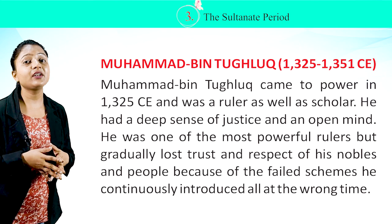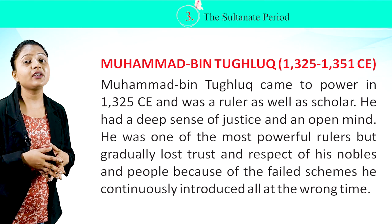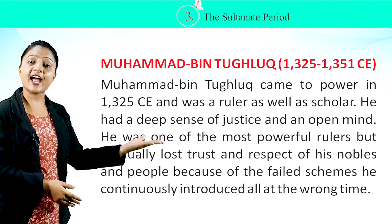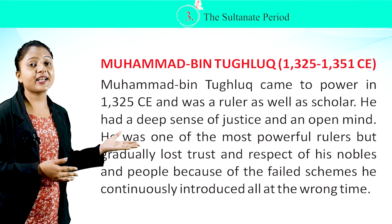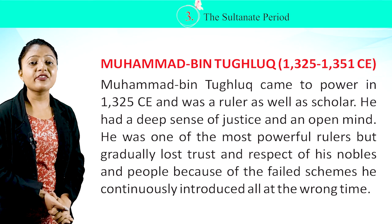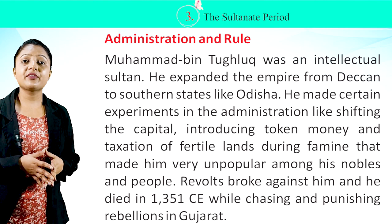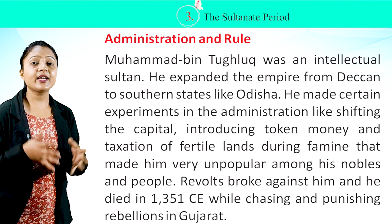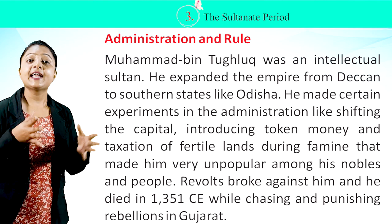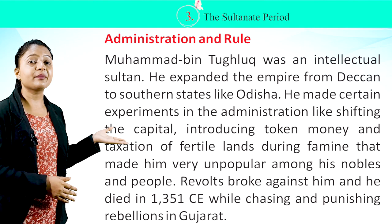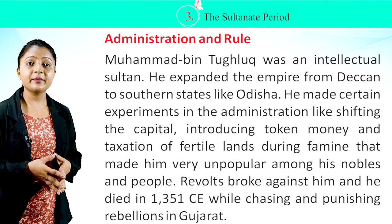Muhammad bin Tughlaq, 1325–1351 CE. Muhammad bin Tughlaq came to power in 1325 CE and was both a ruler and a scholar. He had a deep sense of justice and an open mind. He was one of the most powerful rulers but gradually lost the trust and respect of his nobles and people because of the failed schemes he continuously introduced at the wrong time. He expanded the empire from the Deccan to southern states like Odisha. He made certain experiments in administration like shifting the capital, introducing token money, and taxing fertile lands during famine, which made him very unpopular. Revolts broke against him, and he died in 1351 CE while chasing rebels in Gujarat.